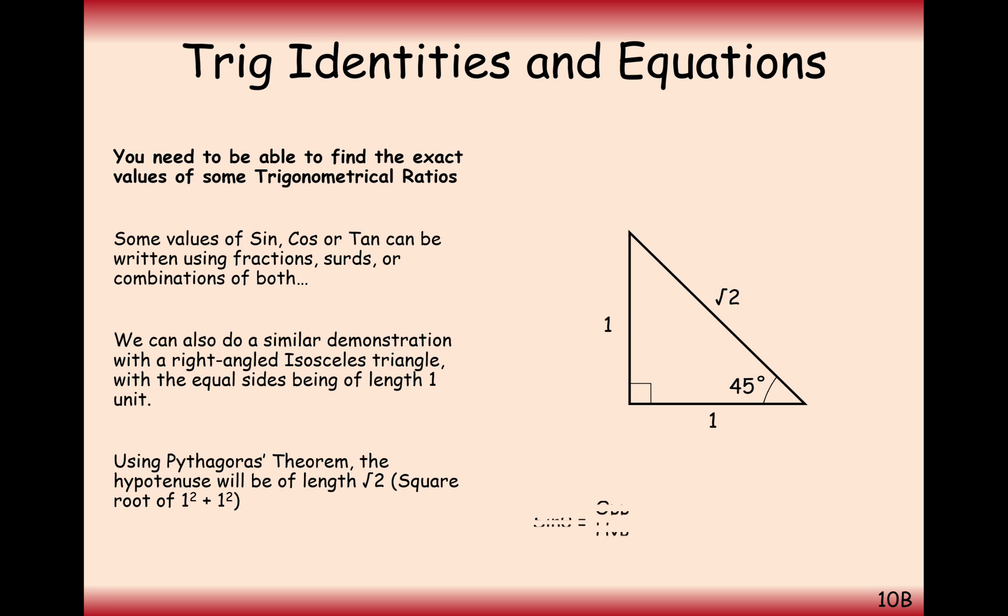So from this, I can get sine, cos, and tan of 45. So sine is opposite over hypotenuse, so that would be 1 over root 2, or root 2 over 2 if we simplify, if we rationalise the denominator.